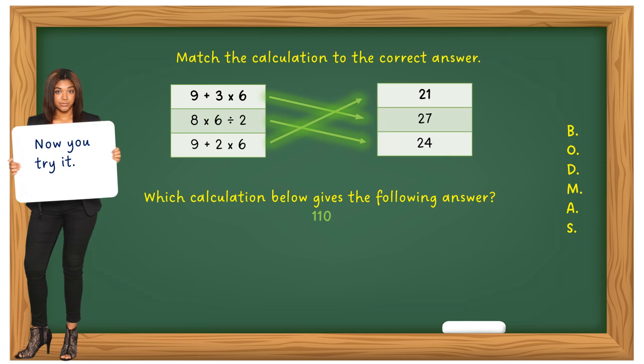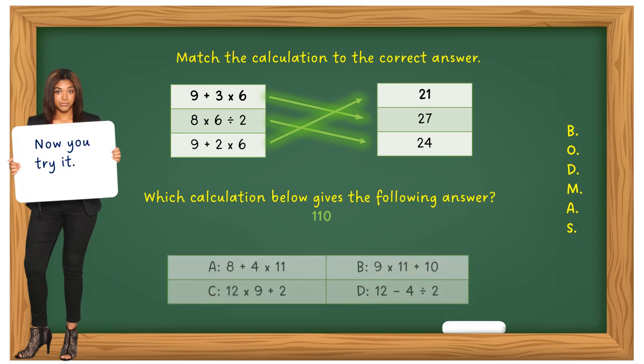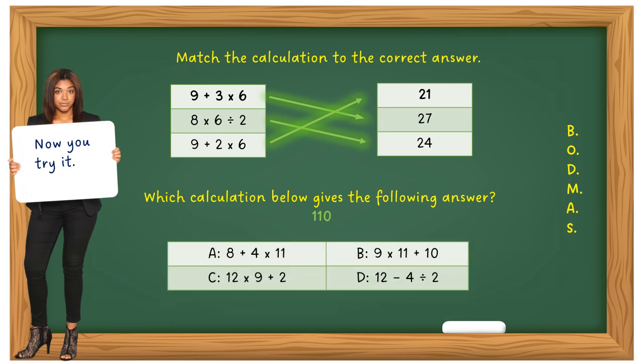Let's look at another question: which calculation below gives the following answer? Pause the video and have a go — which one concludes at 110? The answer is C: 12 times 9 plus 2 is 110. If you got that, well done.